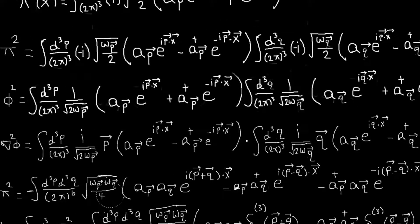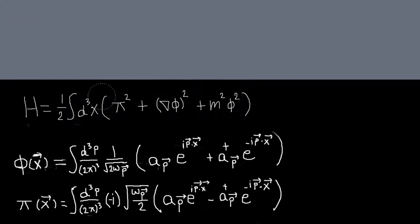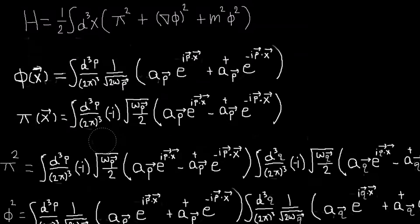So then what we can do is let's just calculate this term in the Hamiltonian. So calculate the integral of pi squared over all space, which I'll just call h_pi here.